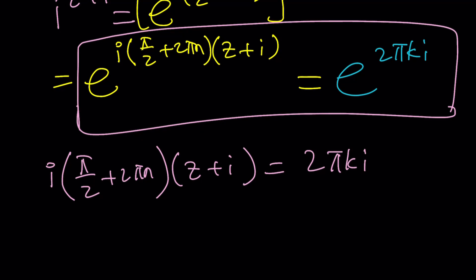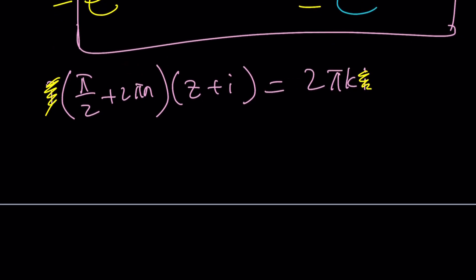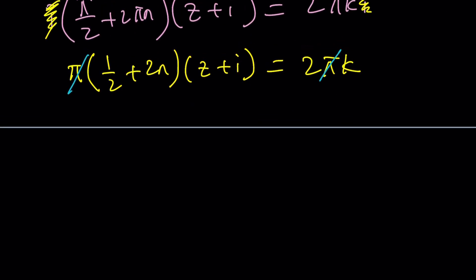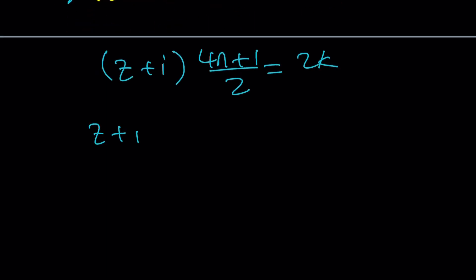Obviously we can divide both sides by π and i. To divide by i I'm going to factor out a π here and that gives me (1/2 + 2n)(z + i) equals 2k. The π is going to cancel out. Let's simplify it more. Make a common denominator to get (z + i) multiply by (4n + 1) all over 2 equals 2k.